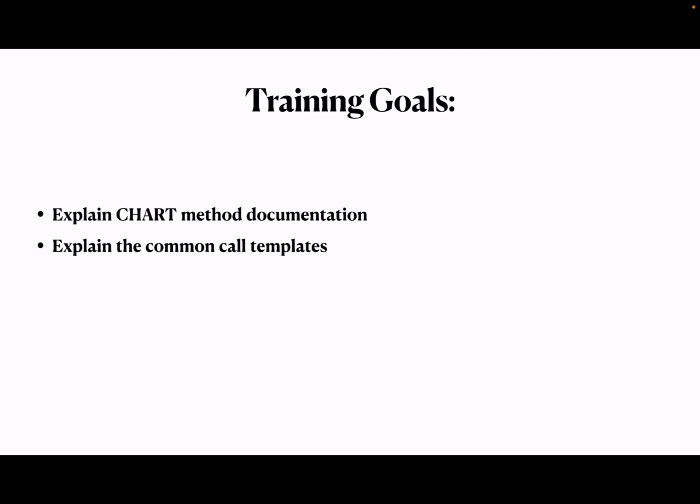And then we're going to go through the common call templates, how to find them, how to use them. Chart method — most of us are familiar with this; a lot of people already use chart method. This is mainly for people who are not. If you're not familiar with it, CHART is an acronym. It stands for: C is for chief complaint, H is history of present illness, A is assessments, R is treatments, T is transport.